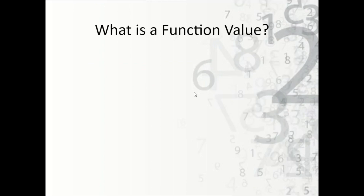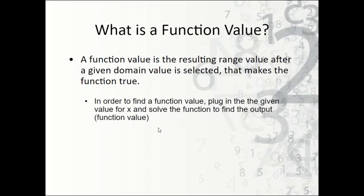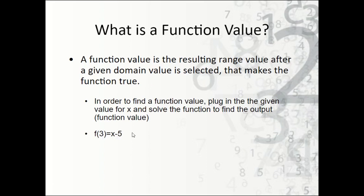Now, what is a function value? A function value is the resulting range value — the y value — after a given domain value is selected that makes the function true. In order to find a function value, we plug in the given value for x, and the function value is the result or output. For instance, if f of 3 equals x minus 5, we plug 3 in for x and get 3 minus 5, which is negative 2. So negative 2 is the function value.